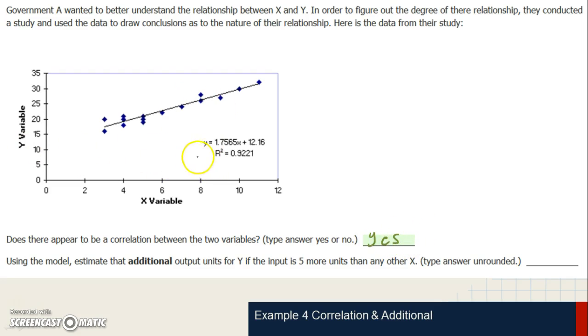And the second part is, using the model, estimate the additional output units for y if the input is five more units than any other x. Now this sounds a little bit confusing and convoluted. However, we can reason through this.